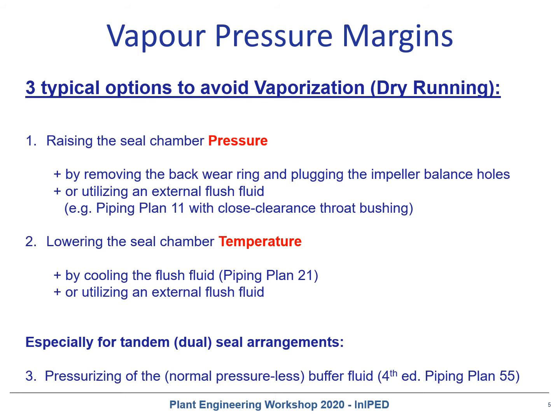Or second, lowering the seal chamber temperature by cooling the flush fluid, also called piping plan 21, or by utilizing an external flush fluid — also a piping plan 11 — as a cold flush fluid to help remove the seal-generated heat.